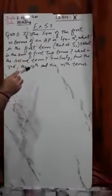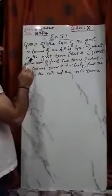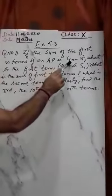Good morning students. In this video we will discuss an important question from exercise 5.3, question number 11. I hope you have understood and memorized the formulas of sum of first n terms and nth term. The question is: if the sum of the first n terms of an AP is given as Sn = 4n - n², what is the first term?